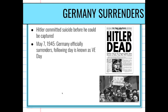Germany officially surrenders in May of 1945, and the following day becomes known as VE Day — Victory in Europe Day. At this point the Allies must figure out how to defeat Japan. Many soldiers expected to go home but were instead redirected to the South Pacific. In our next lesson we'll look at what World War II looked like in the Pacific Theater.